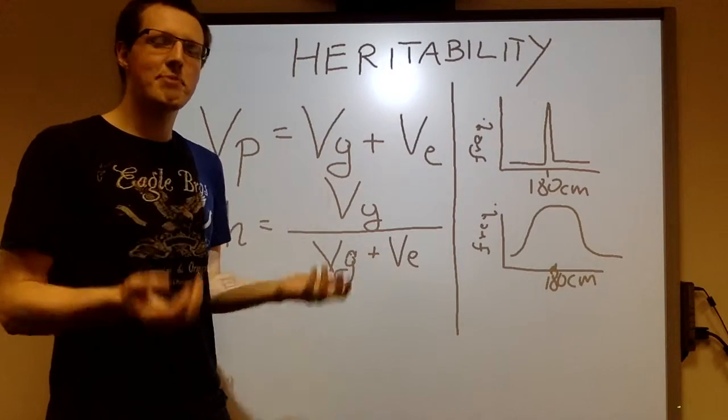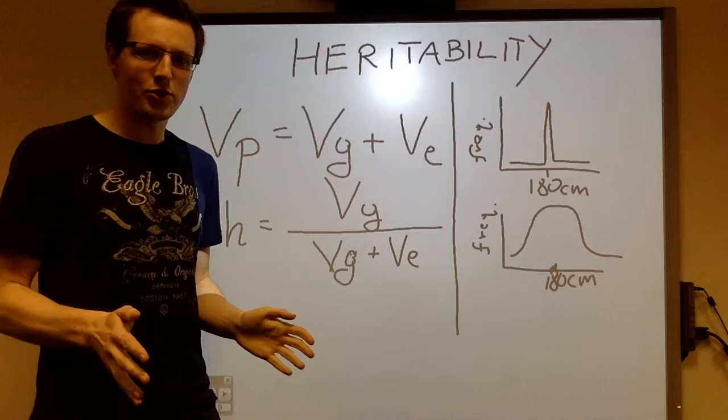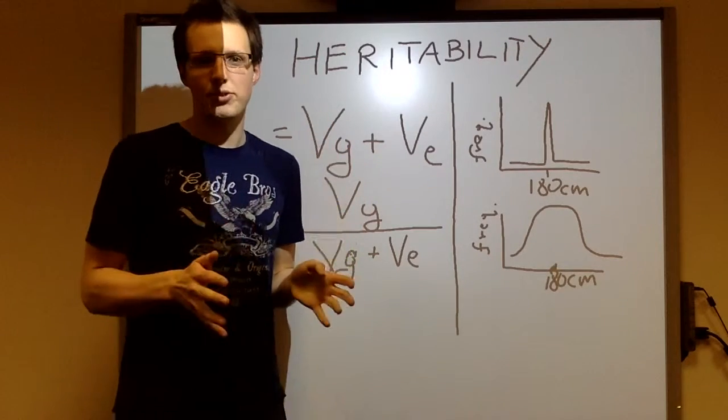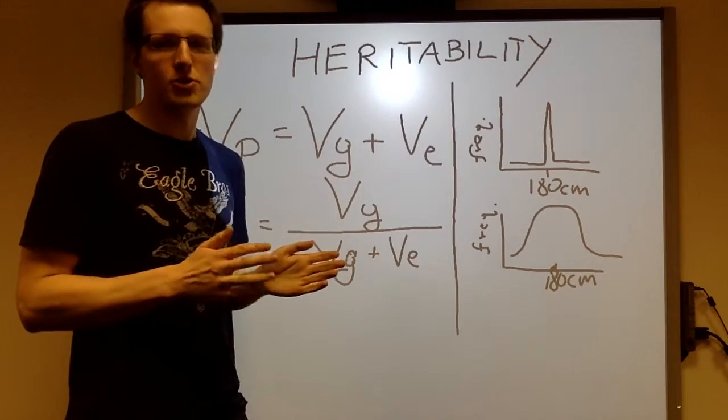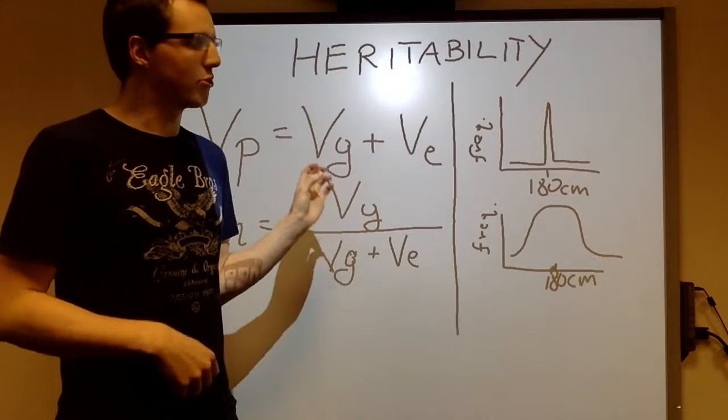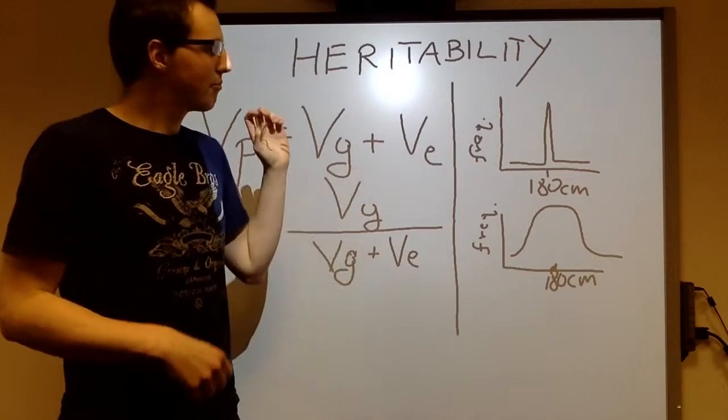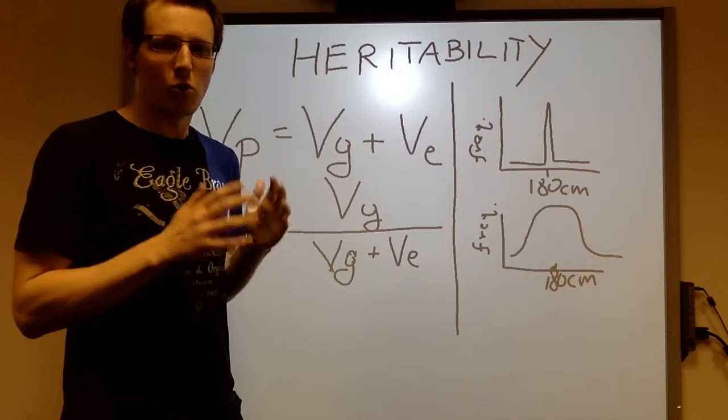Variance is the degree of variability within a population of a particular trait. So a good example of this, if you had a group of 10 people who were all 180cm tall, the mean of the group would be 180cm, but the variance would be nothing at all, because they're all of the same height.